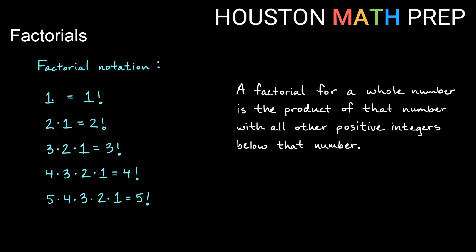There's no positive integer below one, so one factorial is simply just one. Two factorial: you take two times every positive integer below it. The only thing below two is one, so two factorial is just two times one. Three factorial is where we start getting more of a list — there are a couple of positive integers below three, so three factorial is three times two times one.